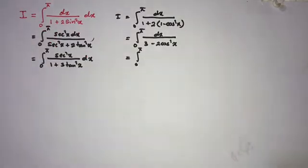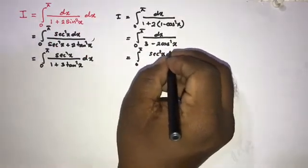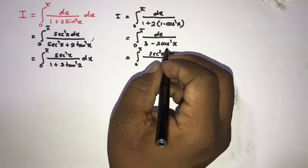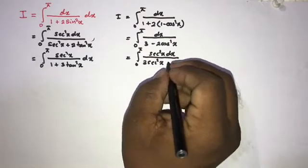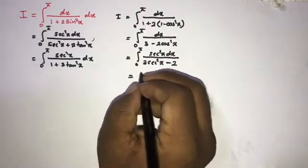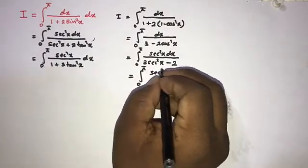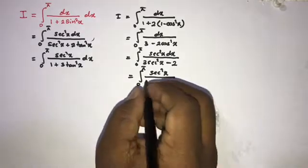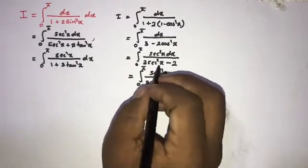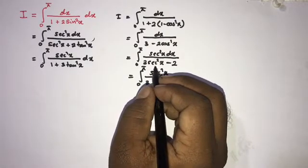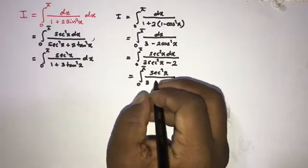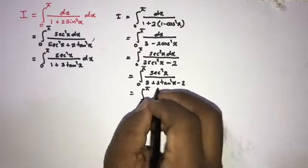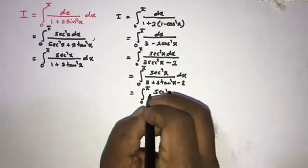Since cosine squared of x equals 1 over secant squared of x, we can write the integral as secant squared of x dx over 3 times secant squared of x minus 2. In the numerator we have secant squared of x; substituting 1 plus tan squared of x for secant squared of x in the denominator gives 3 plus 3 tan squared of x minus 2, so we get the integral from 0 to π of secant squared of x dx over 1 plus 3 tan squared of x.